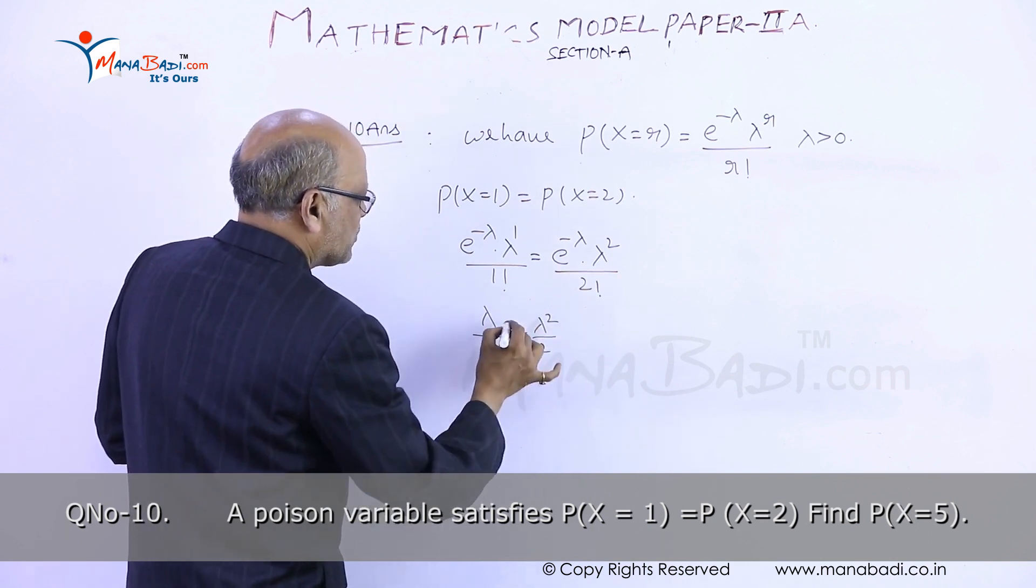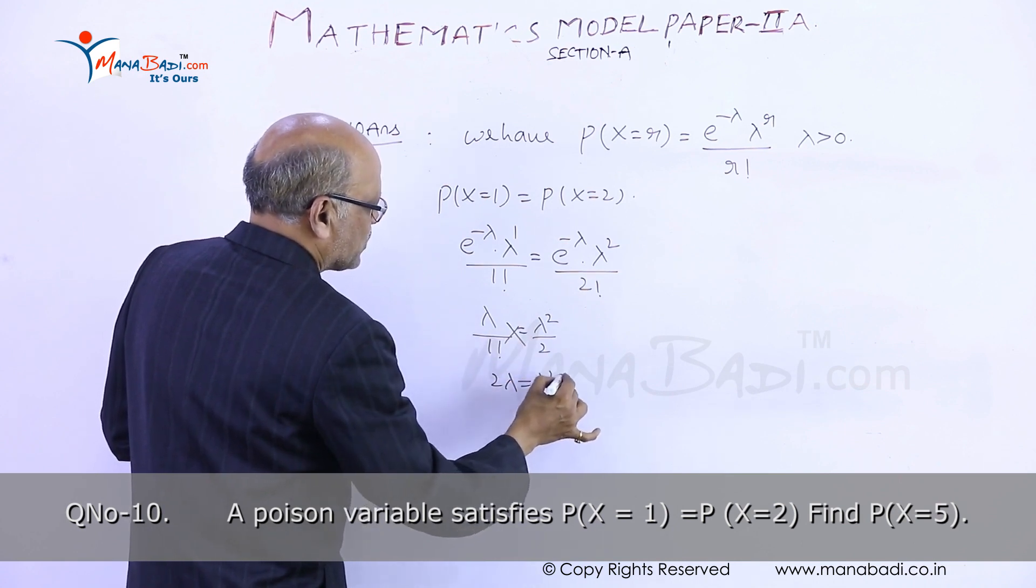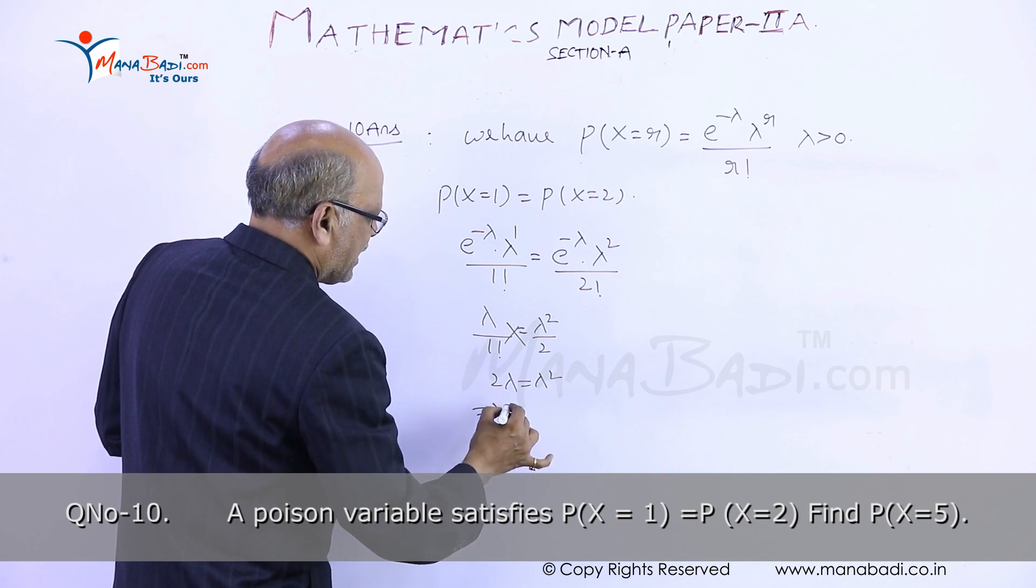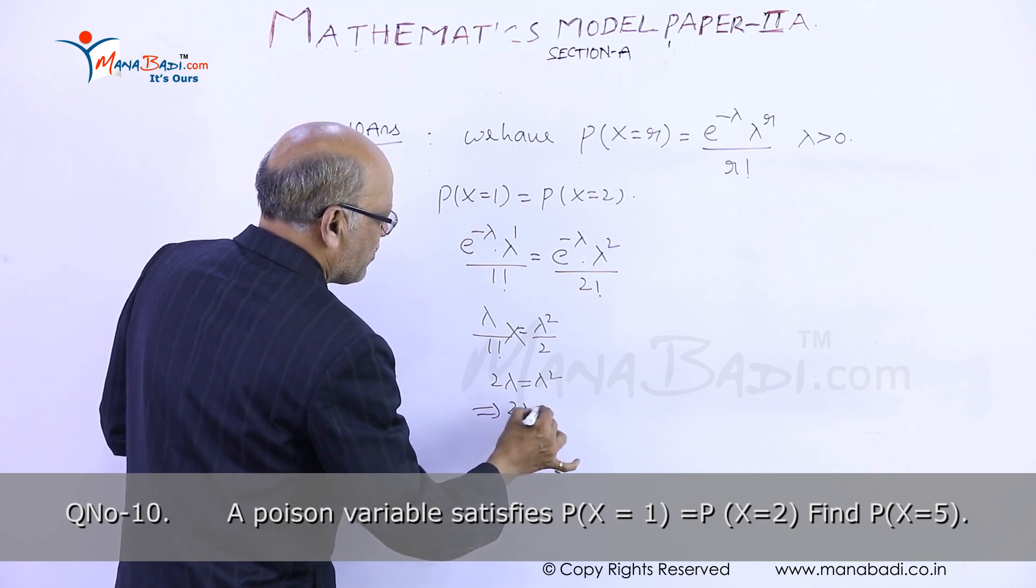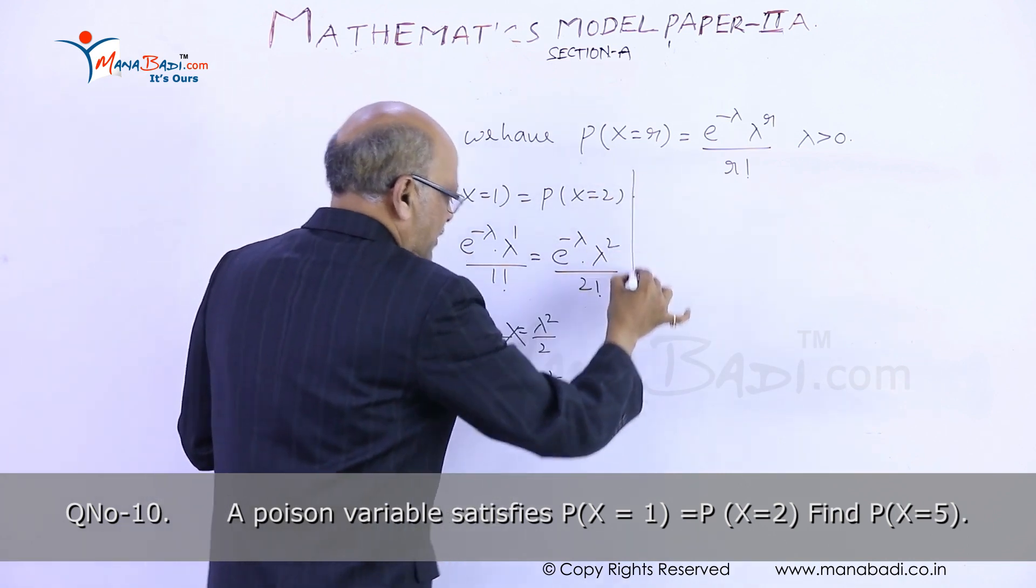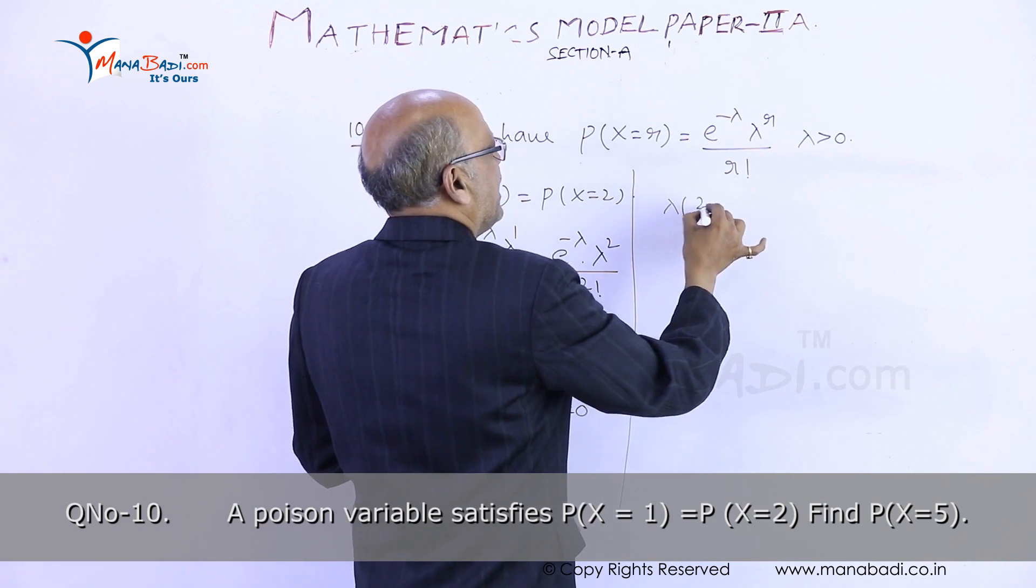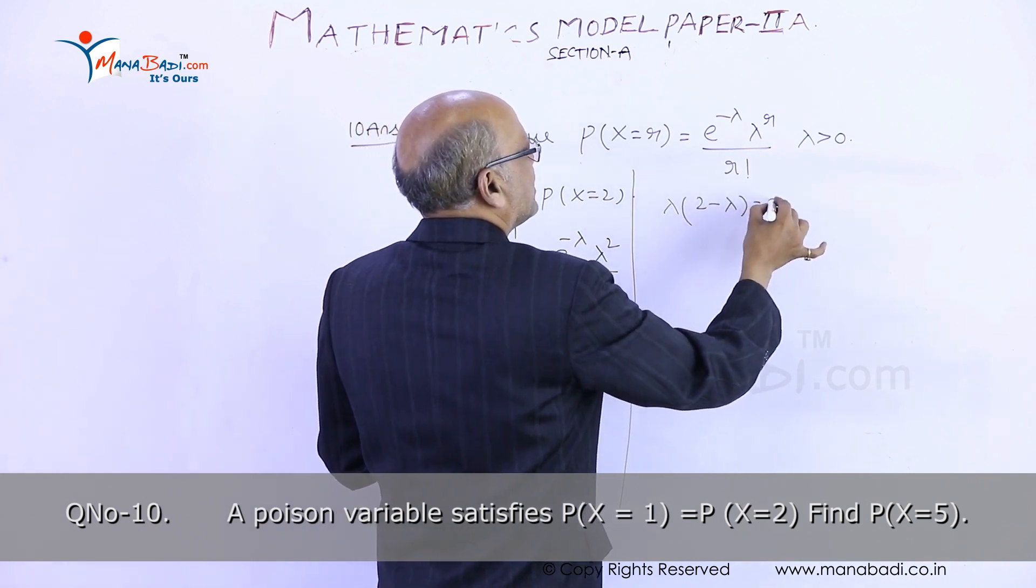So we will write cross multiplication of this equation: 2 lambda equals lambda square. This implies 2 lambda minus lambda square equals 0. Now I will take lambda as common: lambda times (2 minus lambda) equals 0.